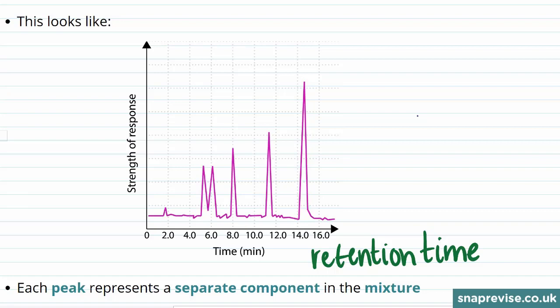In the chromatogram, each individual peak represents a separate component within the mixture, and you can therefore see that the mixture that was separated in order to produce this chromatogram contained one, two, three, four, five, six separate components.